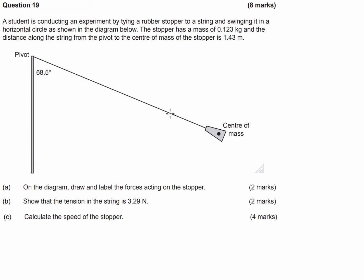To start with part A, the way I think about this is: if the string were to snap, where would the stopper go? The stopper is going to go down — it'll fall because of gravity — and it's also going to go outwards. It'll fling outwards because of the centripetal acceleration you get from swinging an object in a circle. So we have to figure out what forces are going to make it do that, and what forces are stopping it from doing that at the moment.